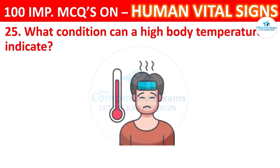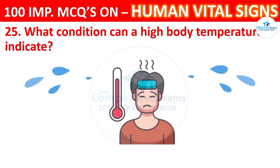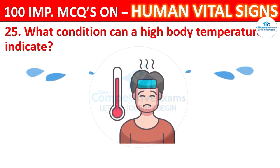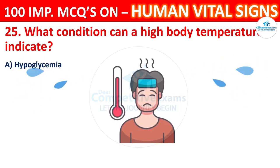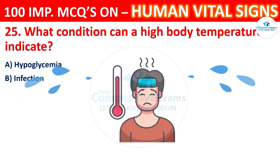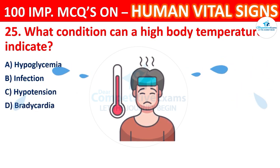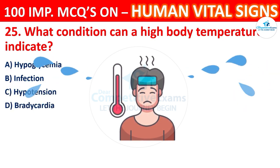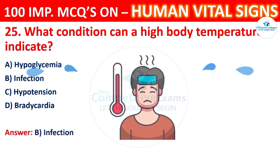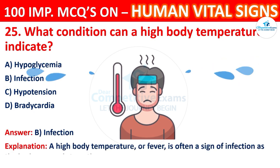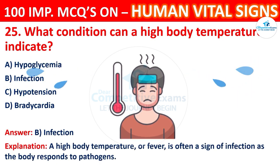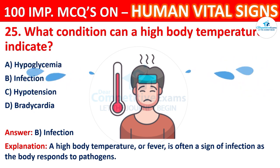Question 25: What condition can a high body temperature indicate? Options: hypoglycemia, infection, hypotension, or bradycardia. The correct answer is B, infection. A high body temperature or fever is often a sign of infection as the body responds to pathogens.